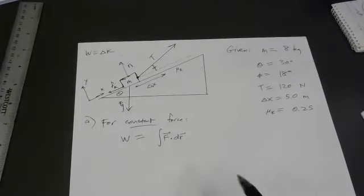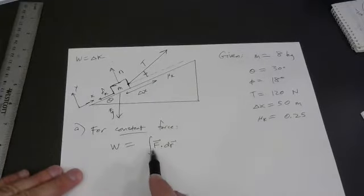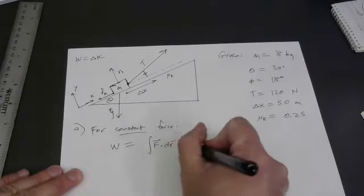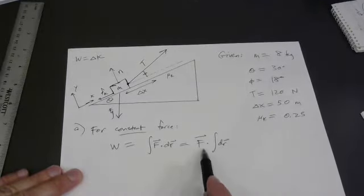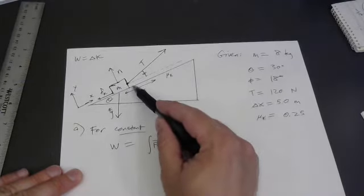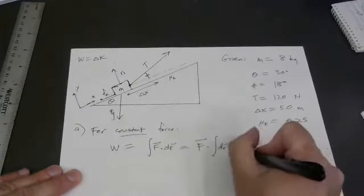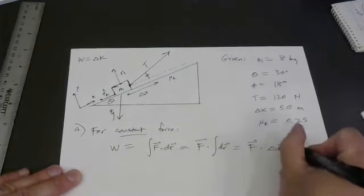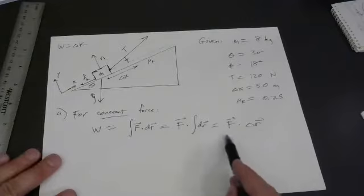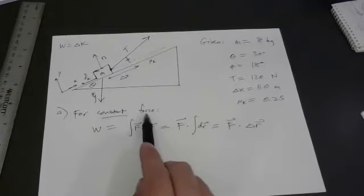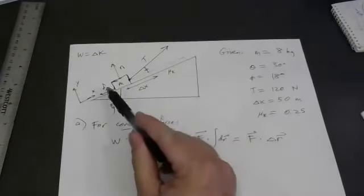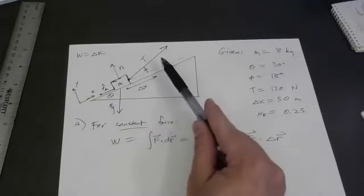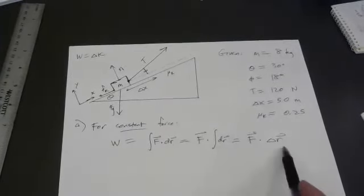If your force is constant, much like in first-semester calculus, you can bring that constant out front and just integrate dr. The integral of dr means adding up all your little scoots — that gives the total displacement. So all we have to do is dot force with total displacement. You can only use it if the force is constant, but most forces in these homework problems are constant.